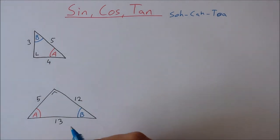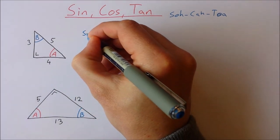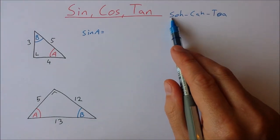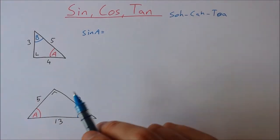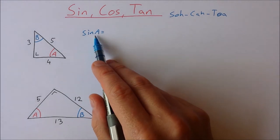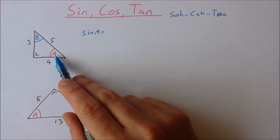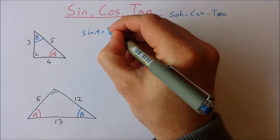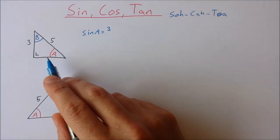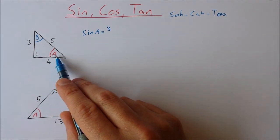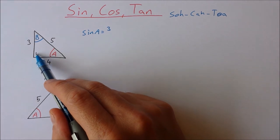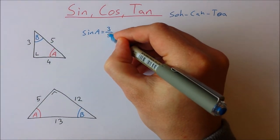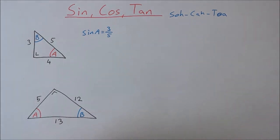Let's calculate the sine of A. Sine is opposite over hypotenuse. Here's A — the side opposite A is 3. The hypotenuse is always opposite the right angle, so that's 5. So the sine of A is equal to 3 over 5.